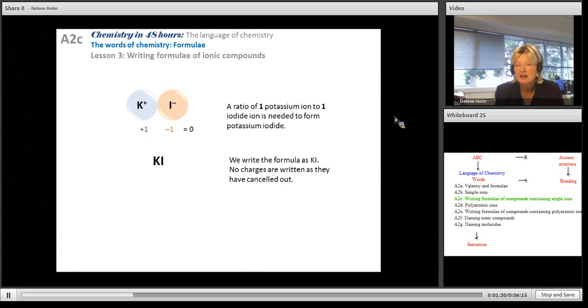Potassium iodide is an example of a real compound. Potassium has a charge of plus one, iodide a charge of minus one. I'm going to need one potassium ion to every iodide ion. So the formula is KI. We don't write the charges because they cancel out. Overall there is no overall charge, and of course we don't write the ones.